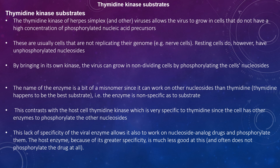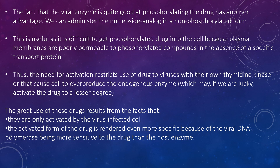The name thymidine kinase is a bit of a misnomer since it can work on nucleosides other than thymidine. Thymidine happens to be the best substrate because the enzyme is nonspecific as to substrate. This is in contrast with the host cell thymidine kinase, which is very specific to thymidine. The lack of specificity of the viral enzyme allows it to work on nucleoside analogs and phosphorylate them. The host enzyme, because of its greater specificity, is much less able to do this and often does not phosphorylate drugs at all. The fact that the viral enzyme is quite good at phosphorylating the drug has another advantage: it can be administered as a nucleoside analog in a non-phosphorylated form. This is useful as it is difficult to get the phosphorylated drug into cells, as plasma membranes are poorly permeable to phosphorylated compounds in the absence of specific transfer proteins.